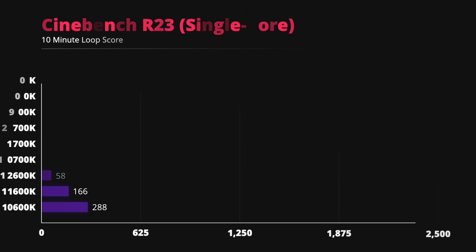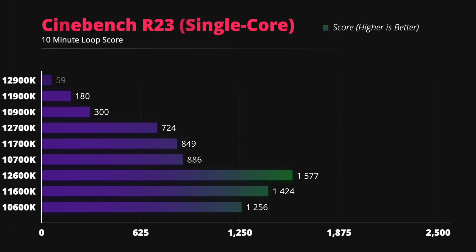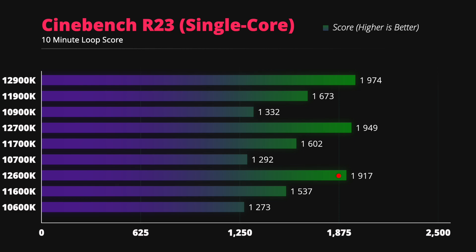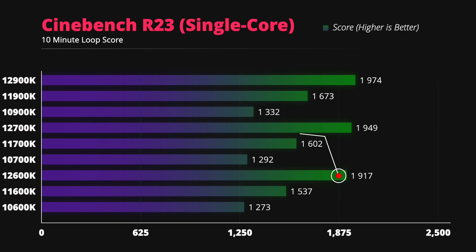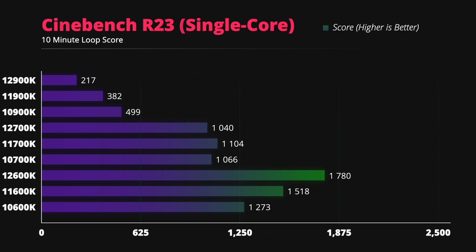In the Cinebench single-core test, the i5-12600K destroyed Intel's previous flagship i9-11900K — it is 15% faster. The 12900K leads by even more, with an 18% improvement over its 11th gen predecessor.